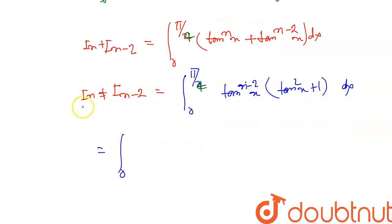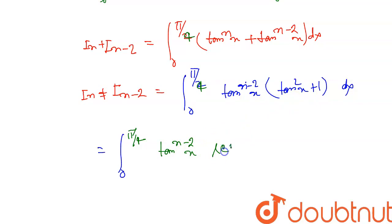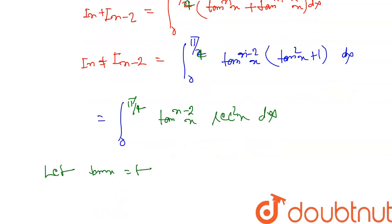So this is ∫₀^(π/4) tan^(n-2)x · (1 + tan²x) dx, and since 1 + tan²x = sec²x, this becomes ∫₀^(π/4) tan^(n-2)x · sec²x dx. Let tan x = t; on differentiation of both sides, sec²x dx = dt.